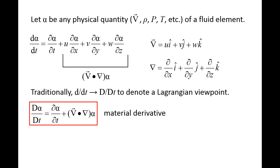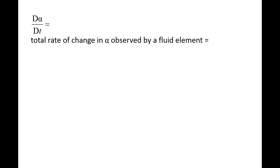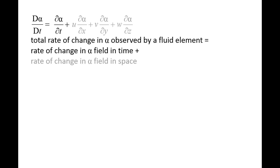We will now discuss the physical interpretation of the terms in the material derivative. D-alpha/dt is the total rate of change of property alpha as observed by a fluid element. This is equal to the rate of change in the alpha field with respect to time at the fluid element's location, plus the rate of change in the alpha field with respect to space at the fluid element's location.